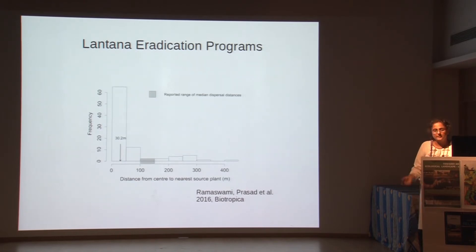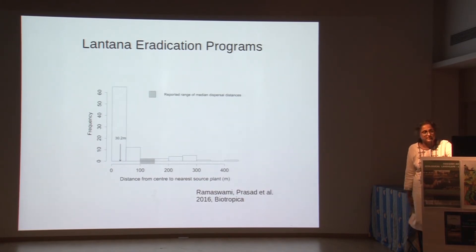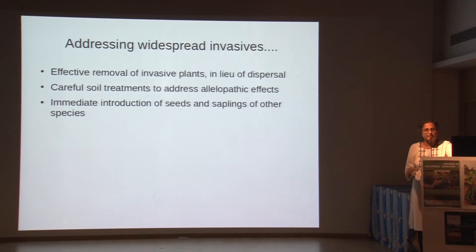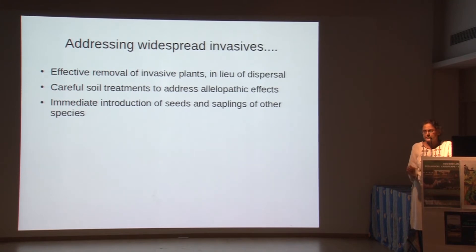When we looked at the eradication programs run by the government of India and tried to make them understand that the nearest lantana source plant from their clearings was so close — seeds were coming back in within days or weeks because lantana fruits so copiously. To effectively remove widespread invasives like lantana, we need very clever techniques. We need to know the dispersal distances and manage areas larger than the maximum dispersal distance — we can't do small clearings here and there. We need careful soil treatments to address allelopathic effects and immediate introduction of seeds and saplings of other species. We need to get there before lantana does.